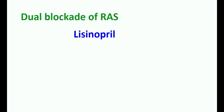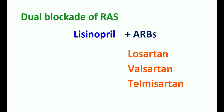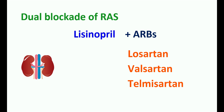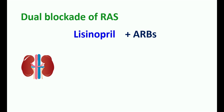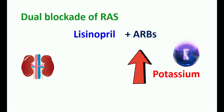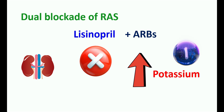One risk factor is the dual blockade of the renin-angiotensin system. Lisinopril is an ACE inhibitor. When taken with ARBs — angiotensin receptor blockers like Losartan, Valsartan, or Telmisartan — it can produce significant inhibition of the renin-angiotensin system, affecting kidney function, producing significant hypotension, and elevating potassium levels. Therefore, this combination is not recommended for controlling hypertension.